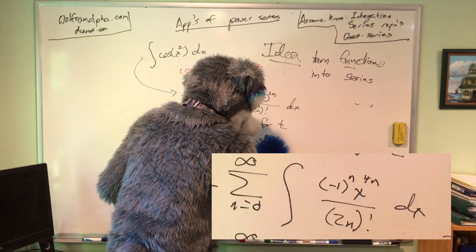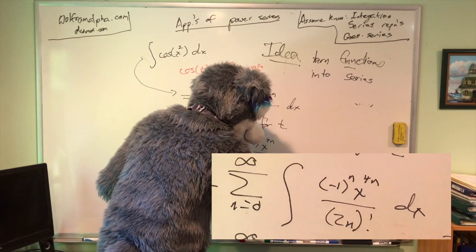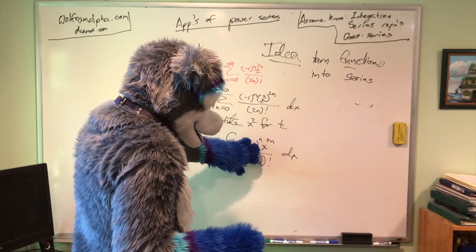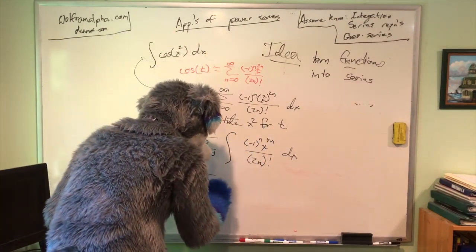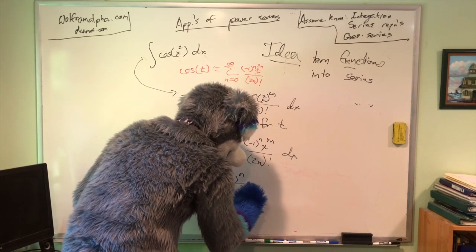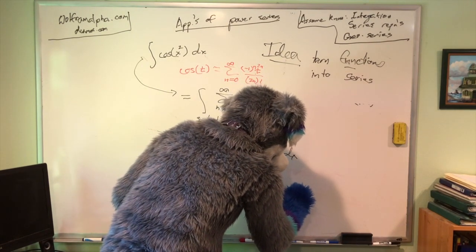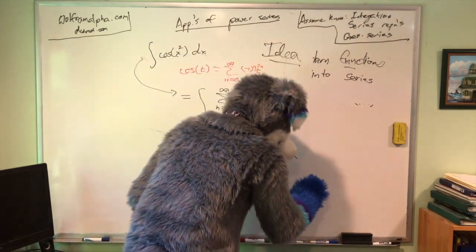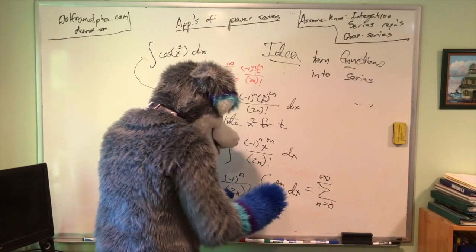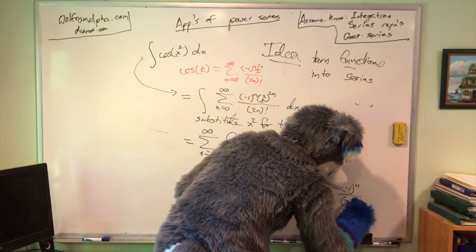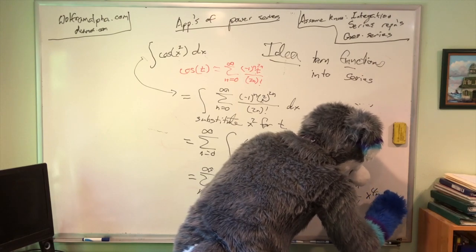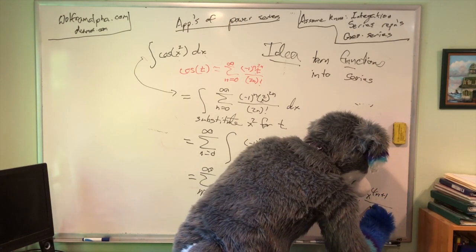Rewriting x squared to the 2n as x to the 4n, then integrating using the power rule, I keep the negative one to the n over 2n factorial, and this will be x to the 4n plus 1 over 4n plus 1.